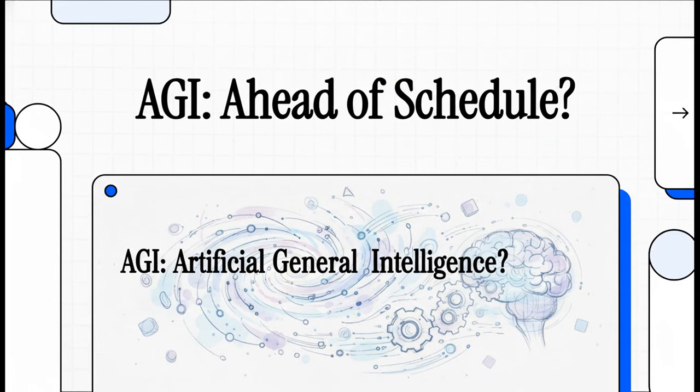Okay, let's get right into it. We need to talk about a story that is quietly unfolding, one that could literally change everything we thought we knew about the future of AI. The big, crazy claim: that true artificial general intelligence, AGI, might already be here.